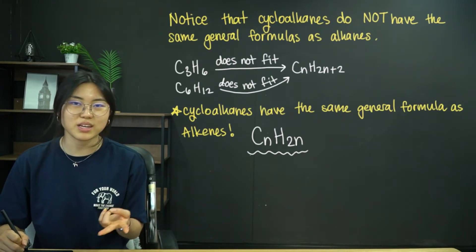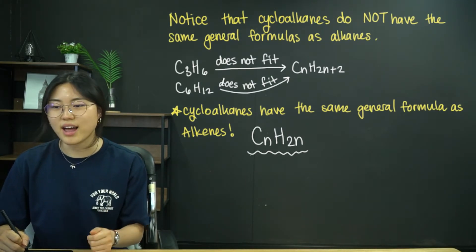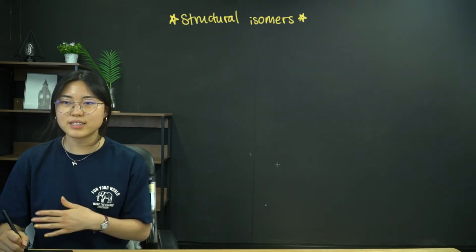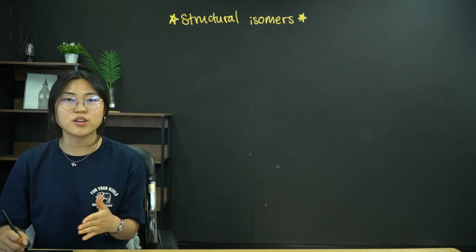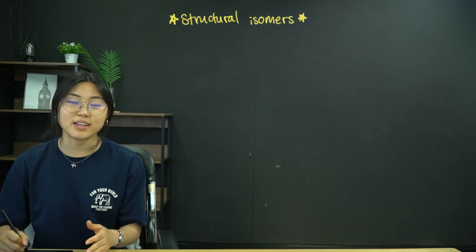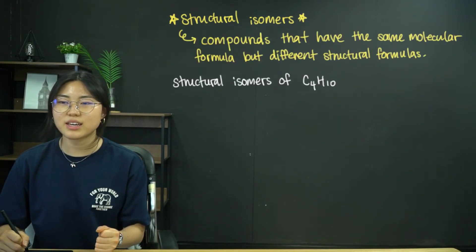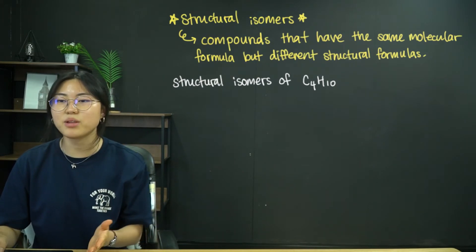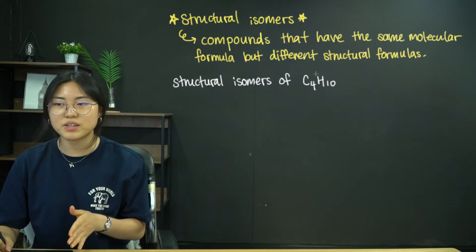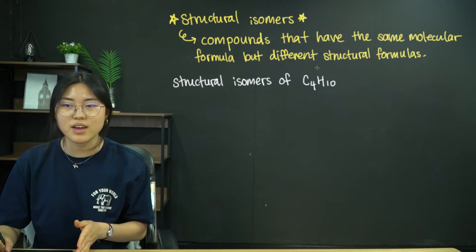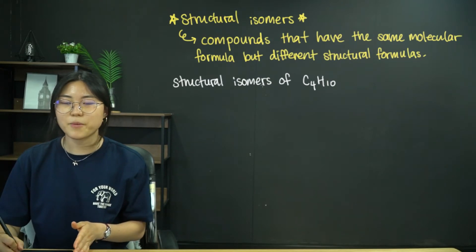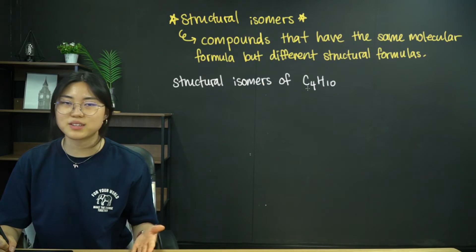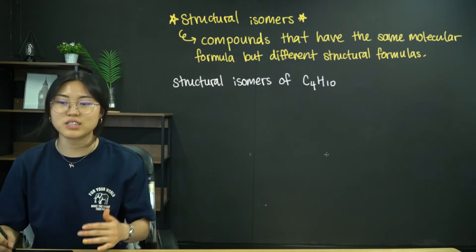We're going to discuss the concept of structural isomers, limited to alkanes. Structural isomers are compounds that have the same molecular formula but different structural formulas. Let's look at the structural isomers of C4H10 to explore this definition.